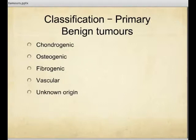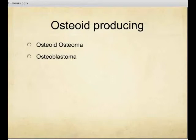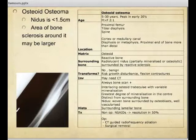I've divided the benign bone tumours into osteogenic, chondrogenic, fibrogenic, and vascular, plus tumour-like conditions. Osteoid-producing benign bone tumours include osteoid osteoma and osteoblastoma. The common age group for osteoid osteoma is 5 to 30 years, with a mean age around 18. There are more males than females diagnosed with these tumours.